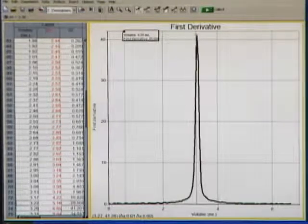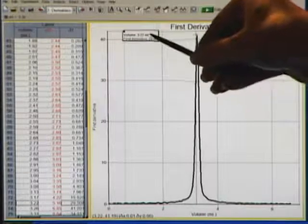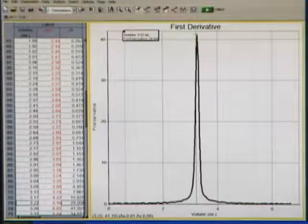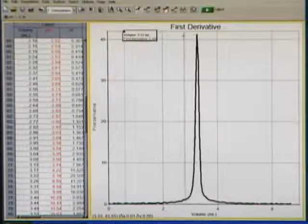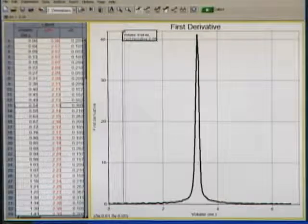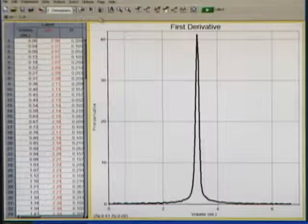Even better than first derivative though, a second derivative. So I'm going to close out this first derivative, go to the next page button again, and here's our second derivative. Our equivalence point is going to be right where that second derivative crosses the zero line.